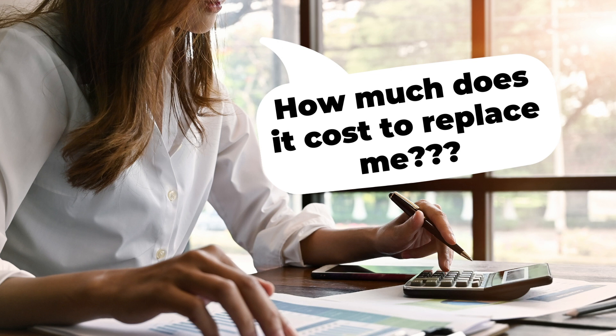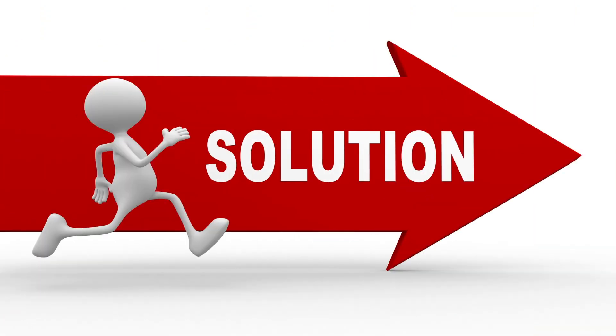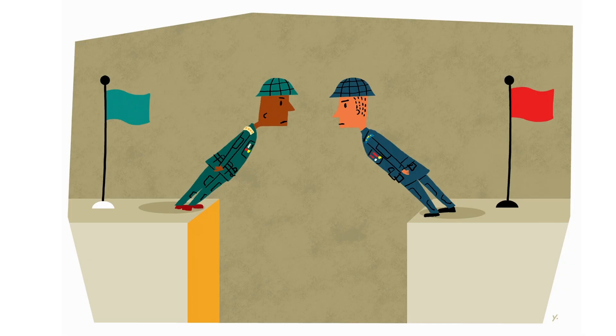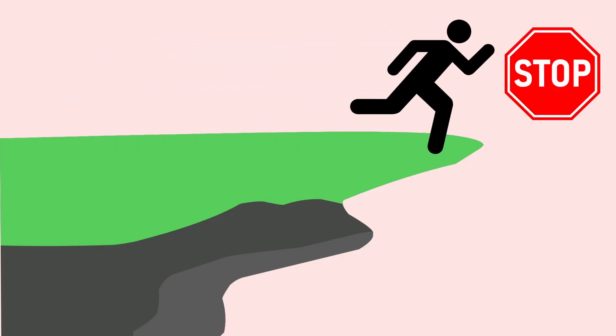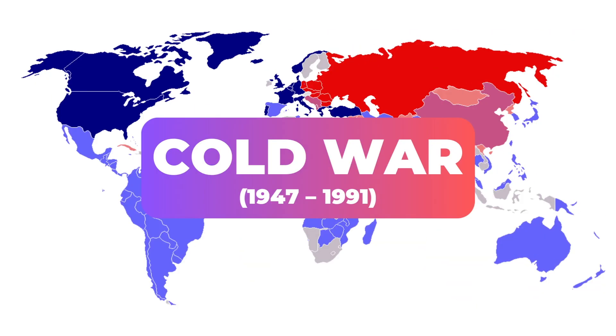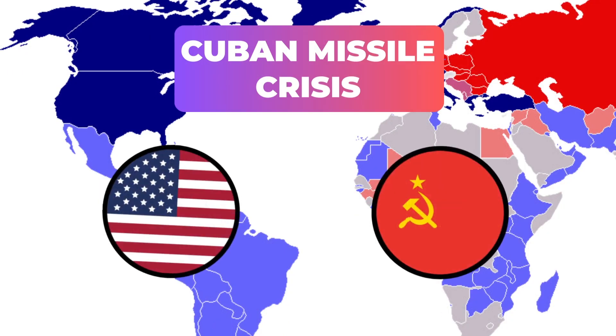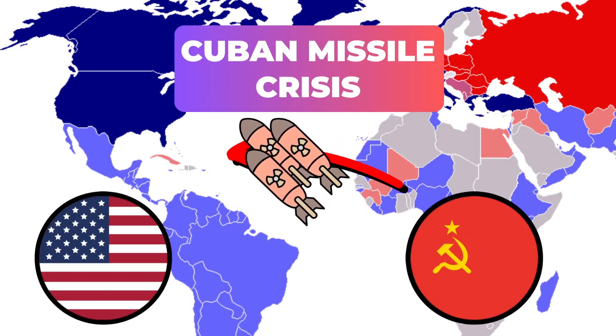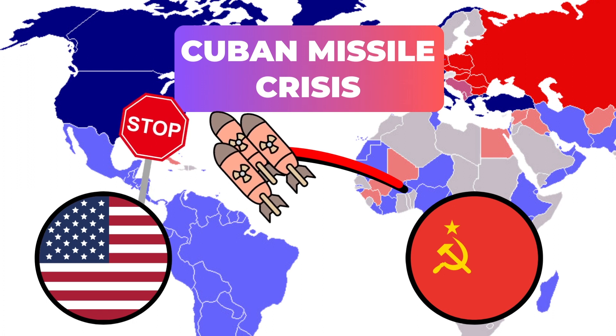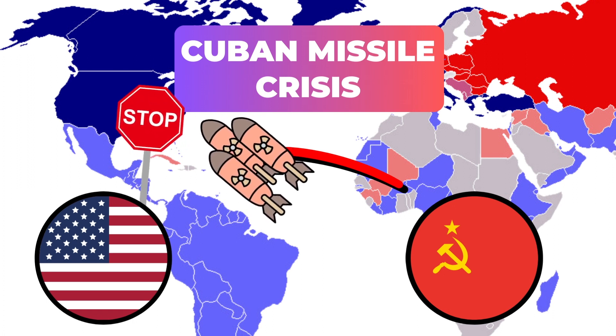I could easily hit this balance wrong. There's actually a better solution and it borders on the edge of brinksmanship — the art and practice of pursuing a dangerous policy to the limits of safety before stopping. And here we draw inspiration from the cold war, specifically the Cuban Missile Crisis. In this tension between the US and USSR, the latter was seeking to place nukes from Cuba within striking distance of the mainland US, and of course the US was trying all they could to stop this.